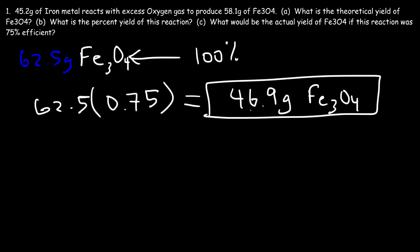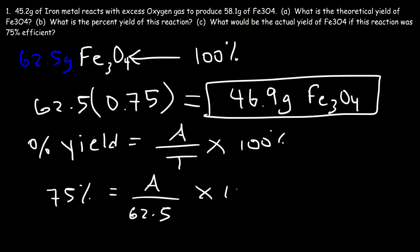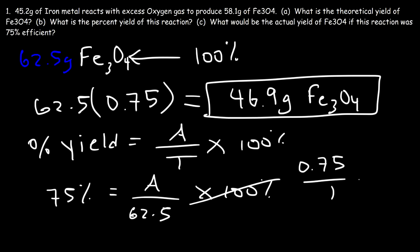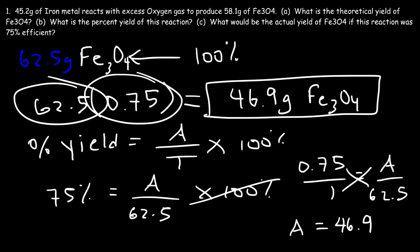You can also use the equation: percent yield equals actual yield divided by theoretical times 100. The percent yield is 75%, you're looking for actual yield, and the theoretical yield is 62.5. Dividing both sides by 100 gives 0.75, then cross-multiplying gives actual yield equal to 0.75 times 62.5, which is 46.9 grams. So all you need to do is multiply the theoretical yield by the decimal equivalent of the percentage to get the actual yield.